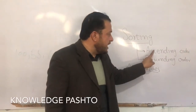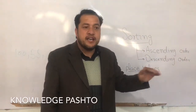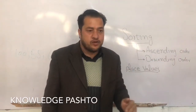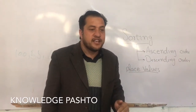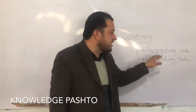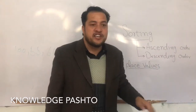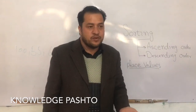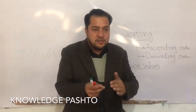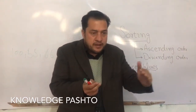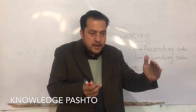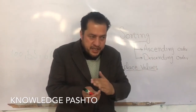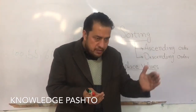Ascending order means increasing order. Descending order means decreasing — the numbers decrease and decrease, going downward.